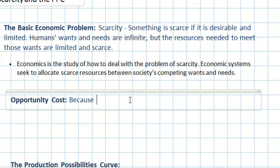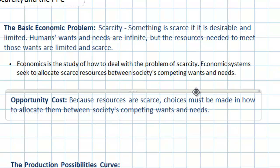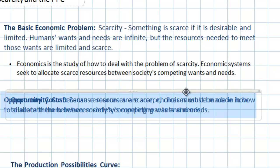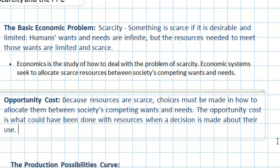Because resources are scarce, choices must be made in how to allocate them between society's competing wants and needs. Any time a choice is made about how to use a particular resource, something must be given up. The opportunity cost of any decision about how to use scarce resources is what could have been done with those resources. Simply put, opportunity cost is the opportunity lost — it's what we miss out on when we decide how to use a particular resource.